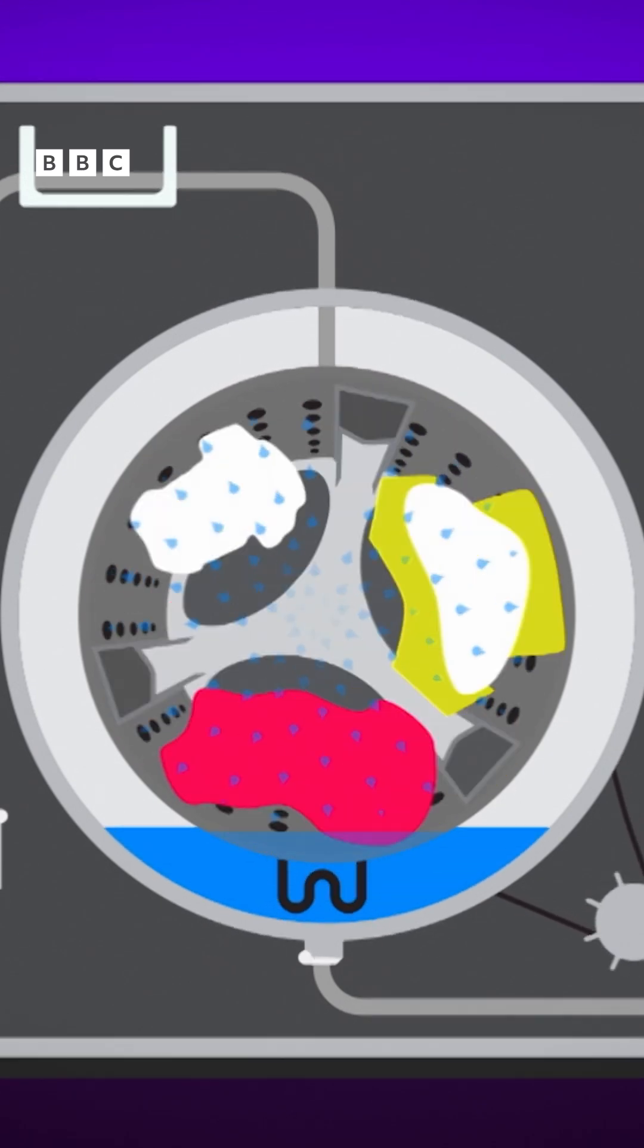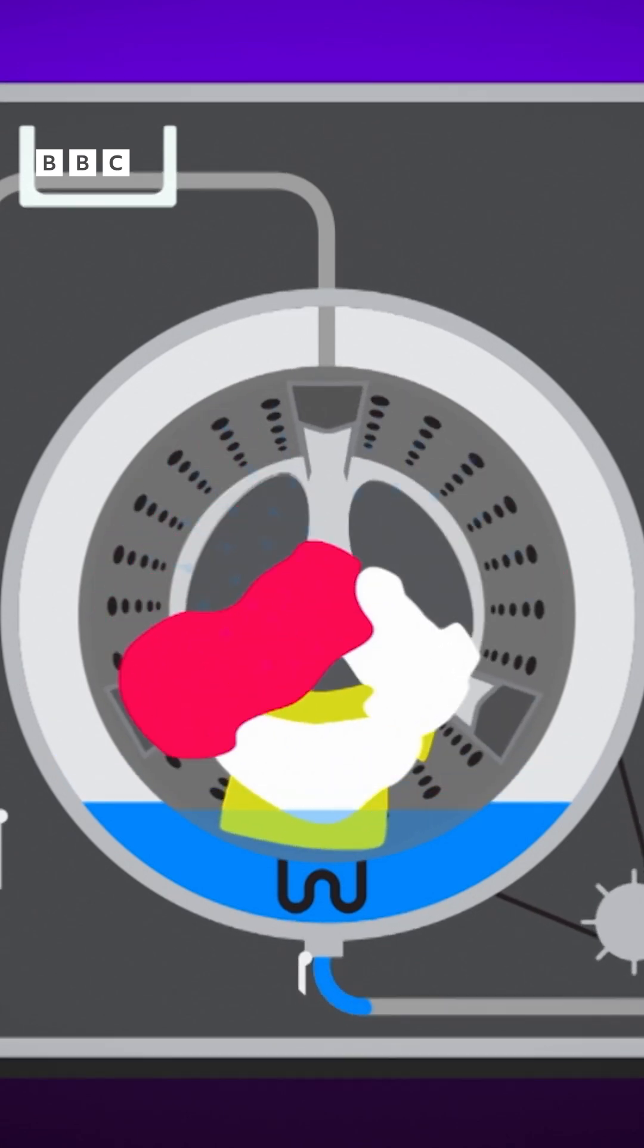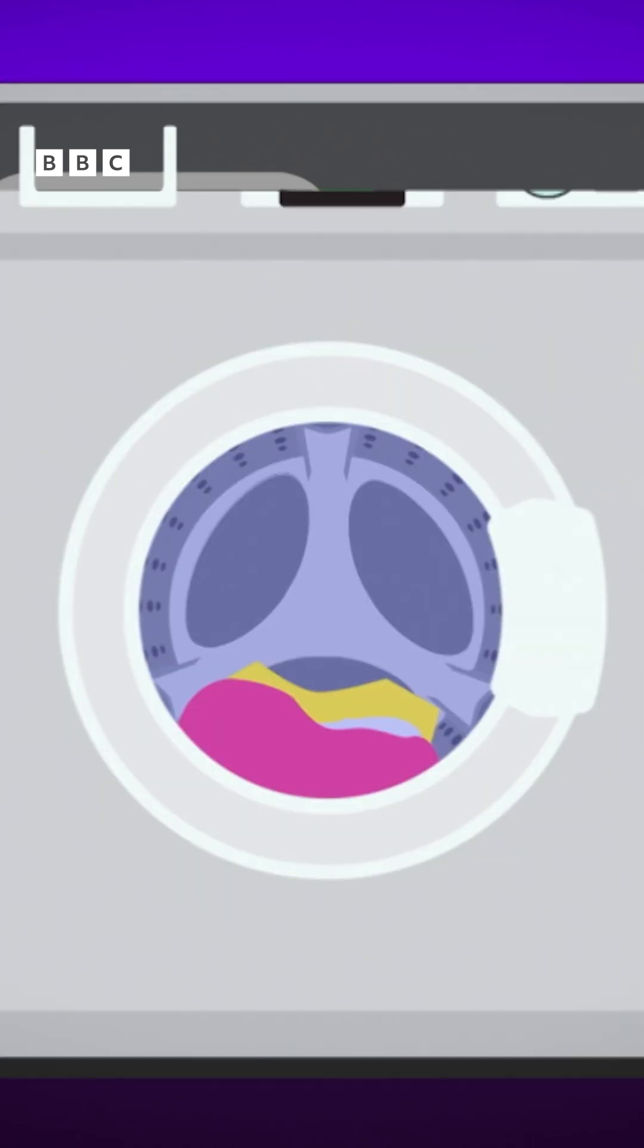Then the drum spins around really, really fast, squeezing most of the water out. Now the clothes are clean and ready to be dried.